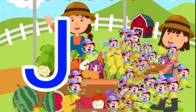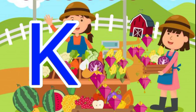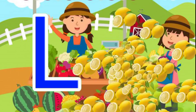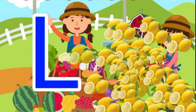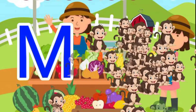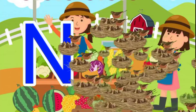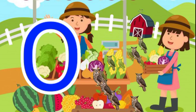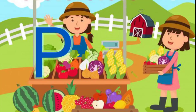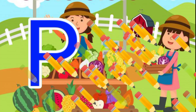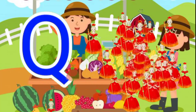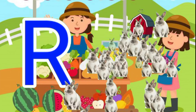I for inkpot, J for joker, K for kite, L for lemon, M for monkey, N for nest, O for owl, P for pencil, Q for queen, R for rabbit.